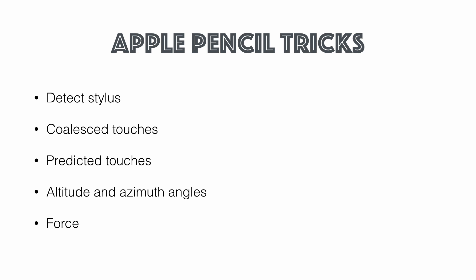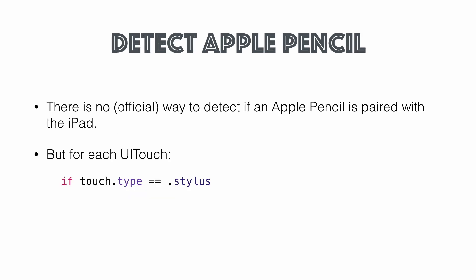Now we've got our drawing program — let's start adding some support for Apple Pencil. The first part is detecting if an Apple Pencil is being used. There's no official way to detect if an Apple Pencil is paired with an iPad, and you need to make sure your application works both with and without it — you can't make an Apple Pencil-only app, Apple will not approve that. In each UITouch object there's a new attribute called 'type' — if it's set to 'stylus' then that touch came from Apple Pencil. Any third-party stylus will report as a finger touch, not stylus.